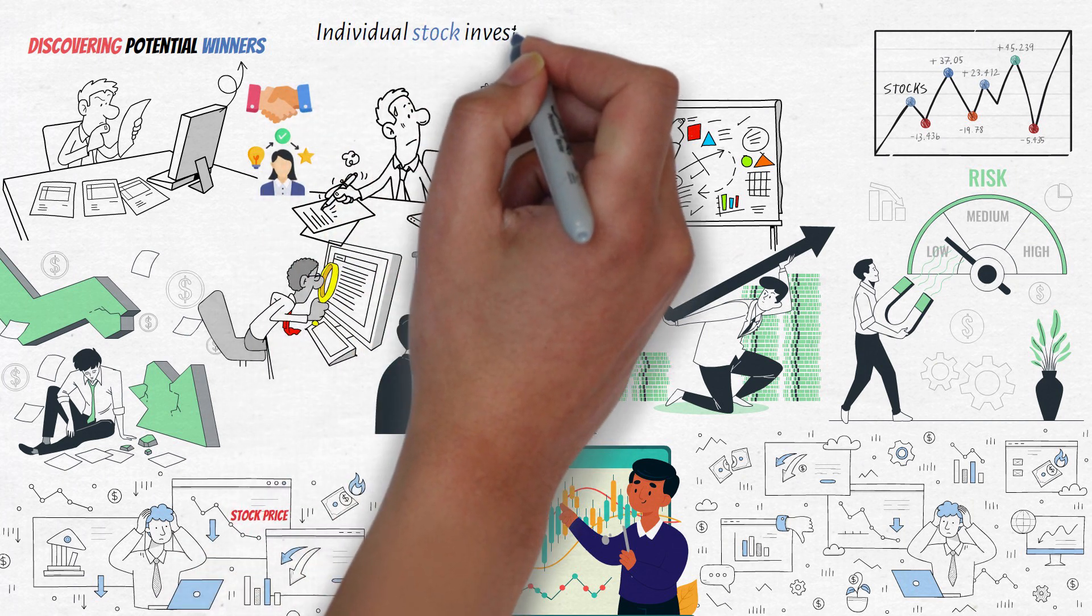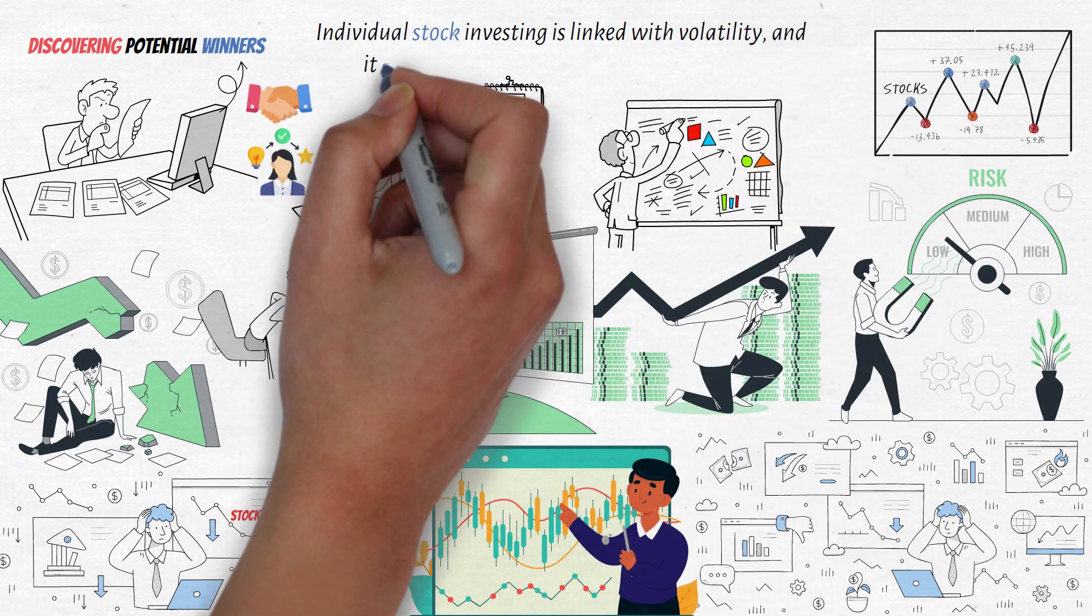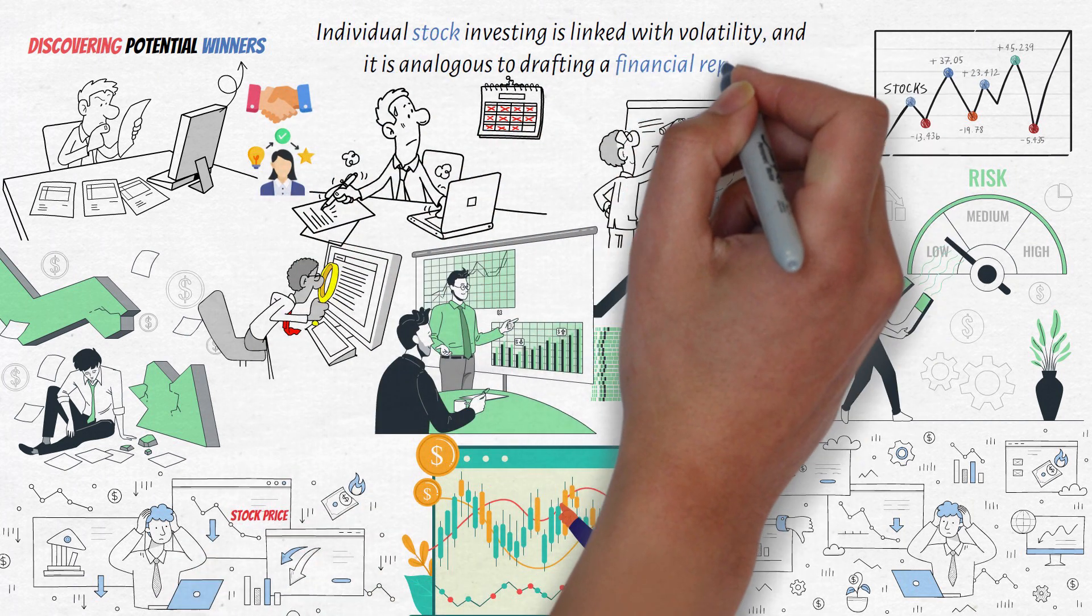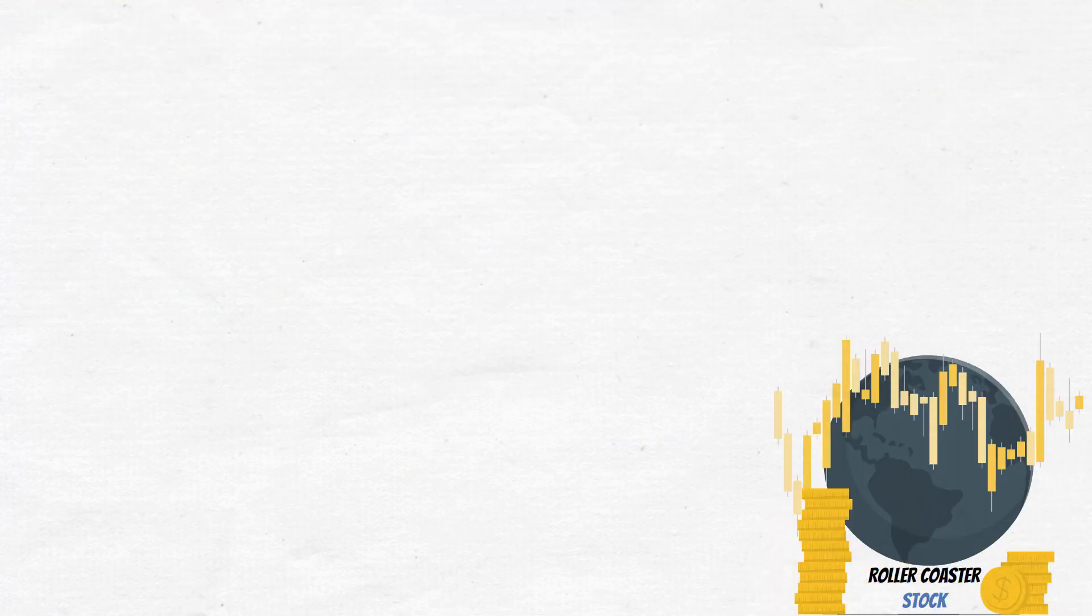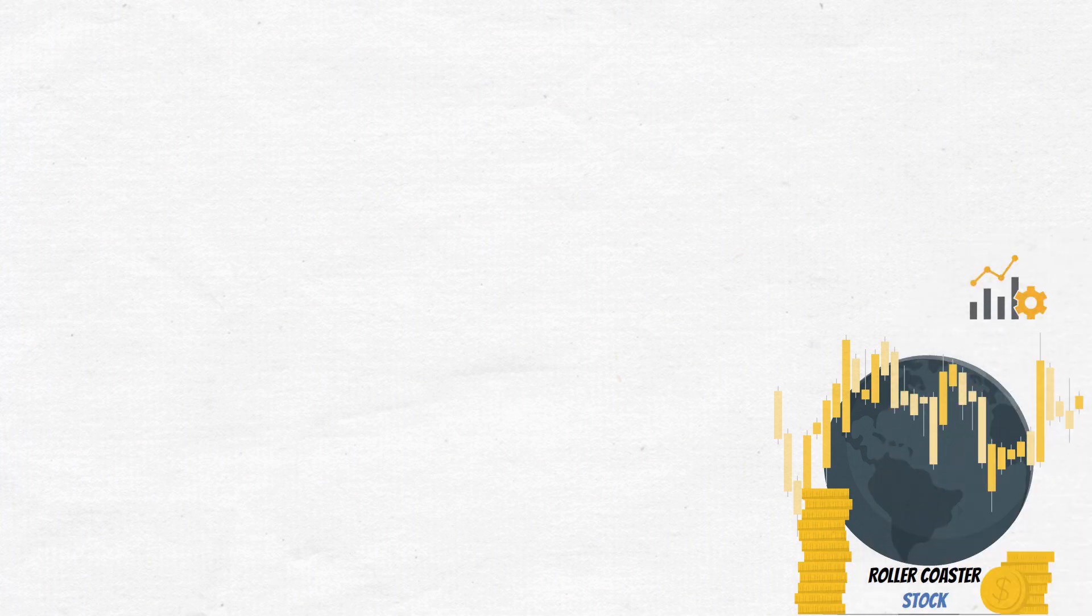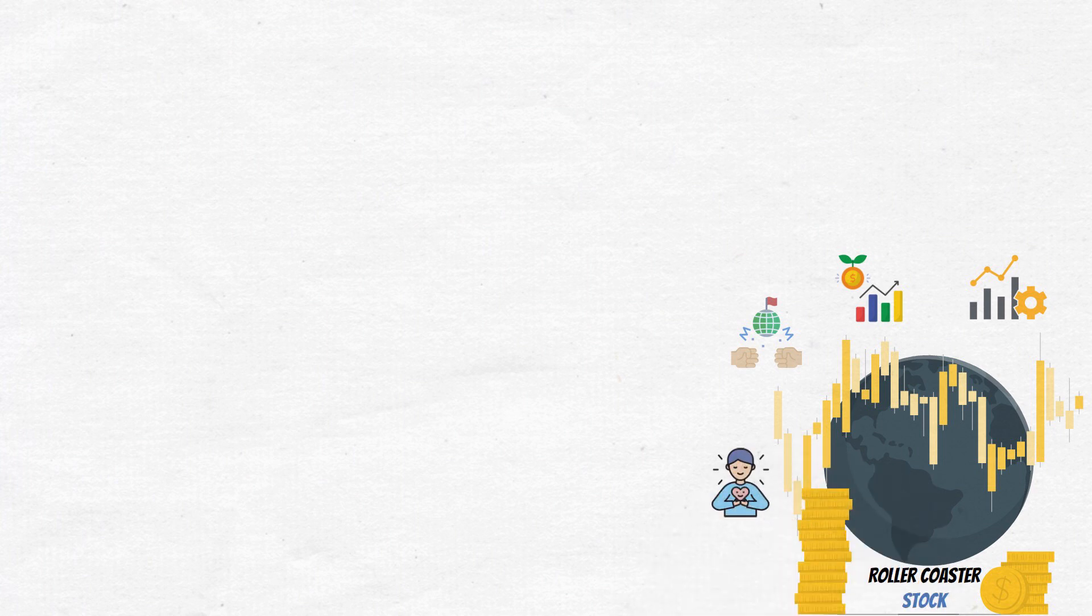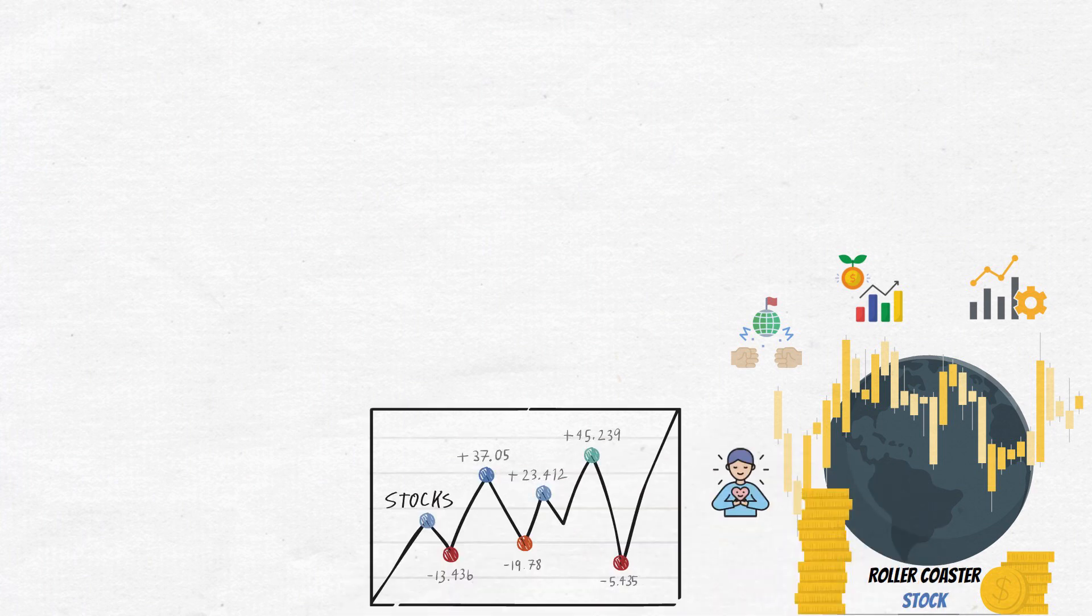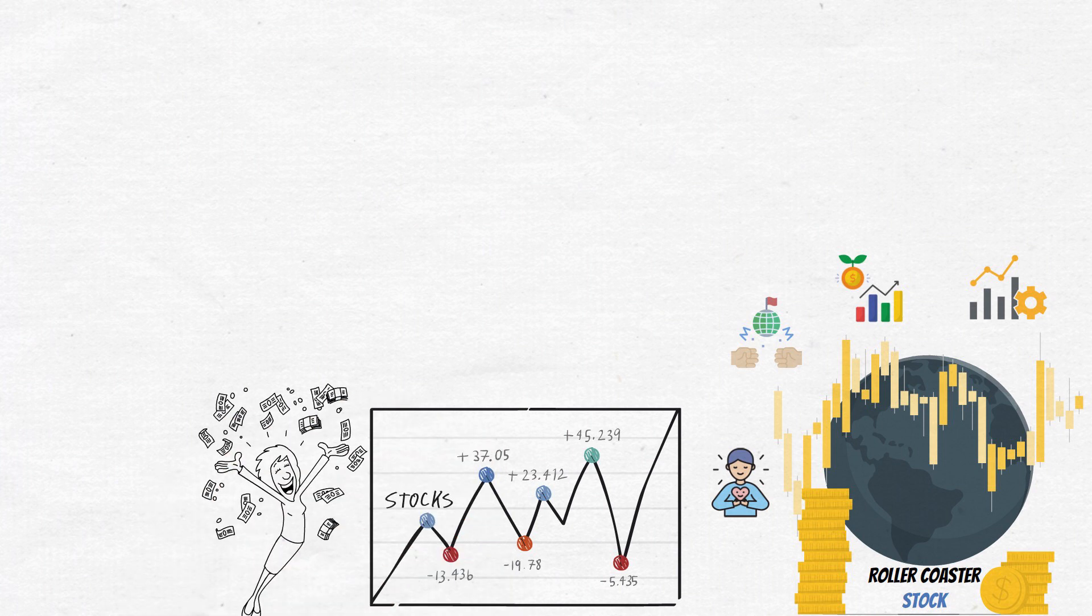Individual stock investing is linked with volatility. Stock prices can swing wildly on a daily basis due to a variety of factors such as company performance, economic conditions, geopolitical events, and investor sentiment. This volatility results in significant price fluctuations, sometimes for no apparent reason. While this unpredictability can present opportunities for rapid gains, it also carries the risk of substantial losses.